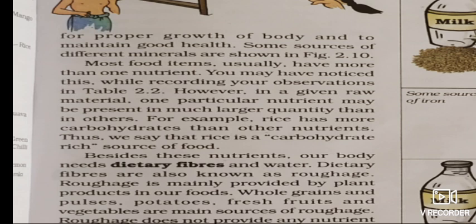This doesn't mean that only one nutrient is present in a food item — in one food item, multiple nutrients are present. But some nutrients are present in larger or major quantities. For example, since there are more carbohydrates in rice, we call rice a carbohydrate-rich food item. Besides these nutrients, our body also needs dietary fibers and water.